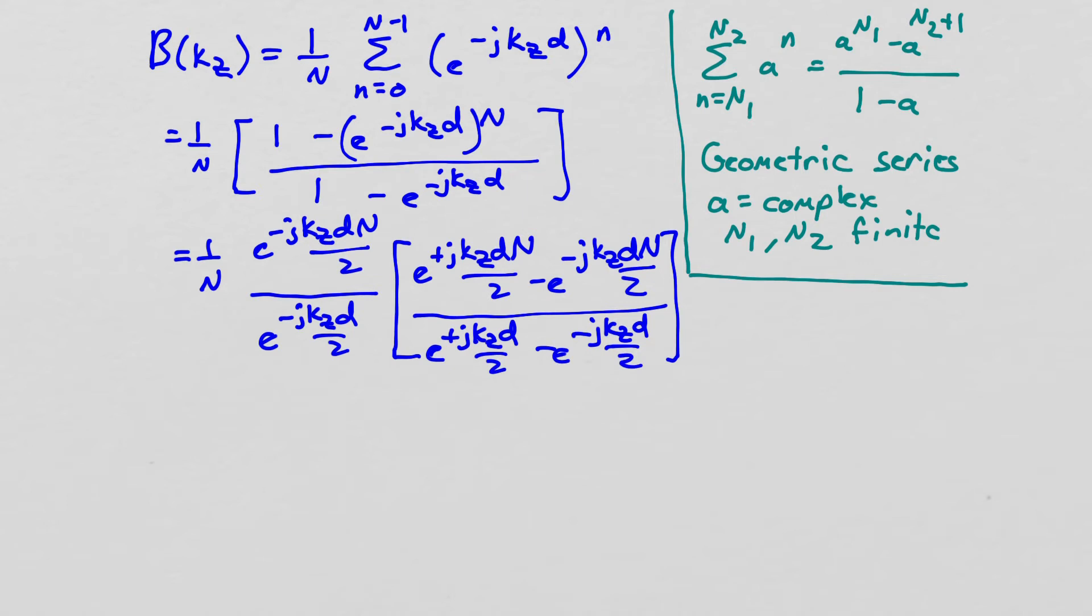Now it might look like I've complicated things more, but what it turns out, this term here looks basic. First of all, if I multiply back through, I get this formula. But I've simplified things a bit because this looks essentially like a sine, and this looks like a sine, and so I can convert this into sine over sine.